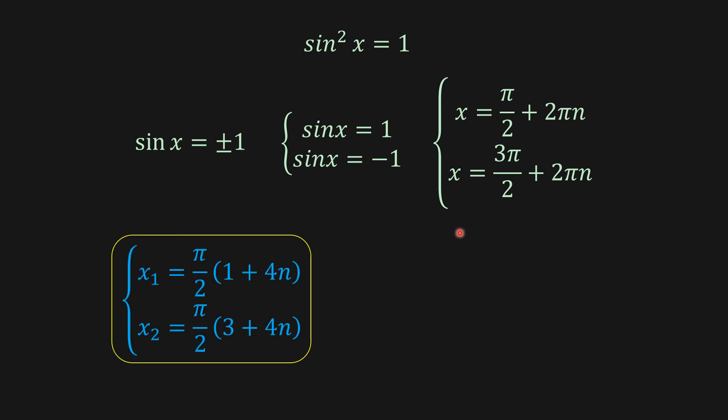And then I'm just going to factor out pi over 2 in this. And then we're going to get x1 equals pi over 2 times 1 plus 4n. And then x2 equals pi over 2 times 3 plus 4n. And where n is what we have on the screen here.